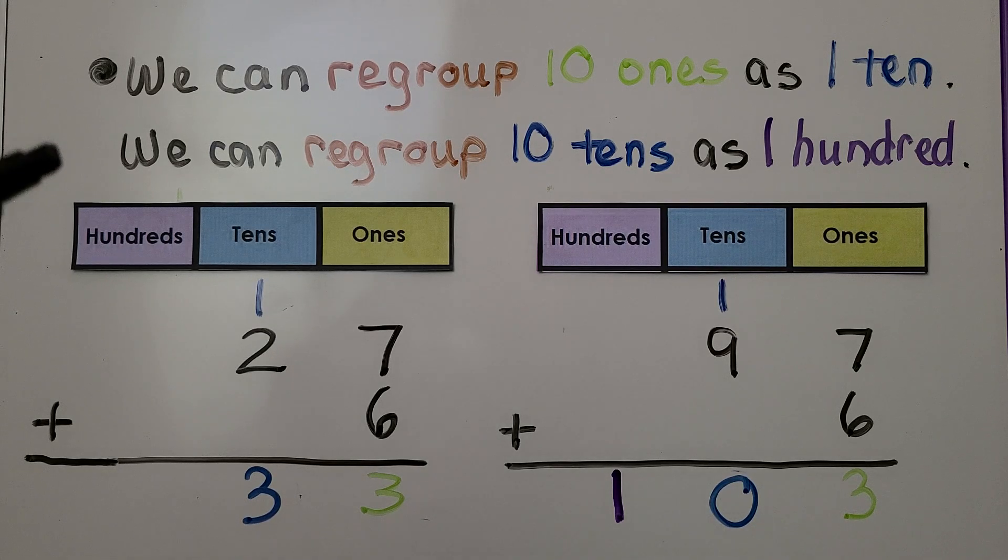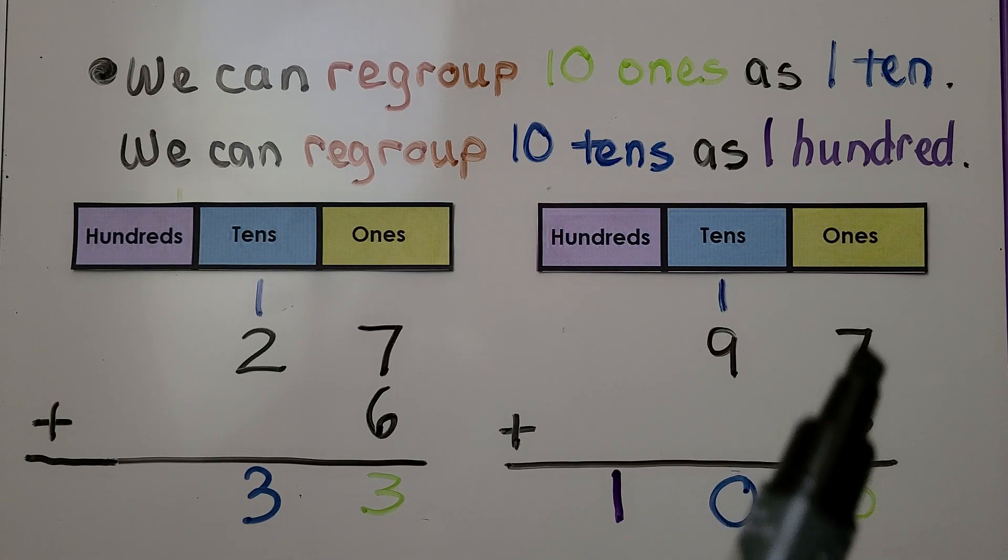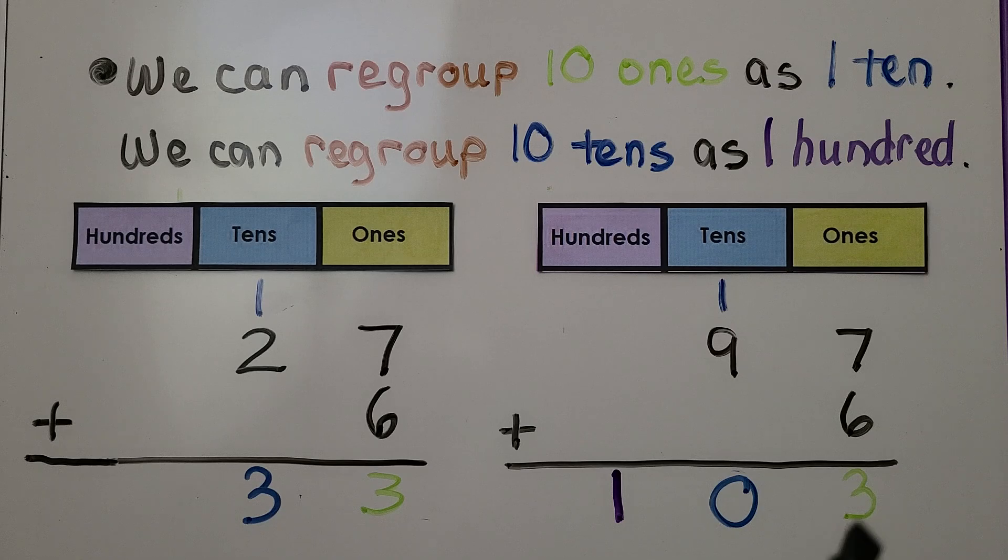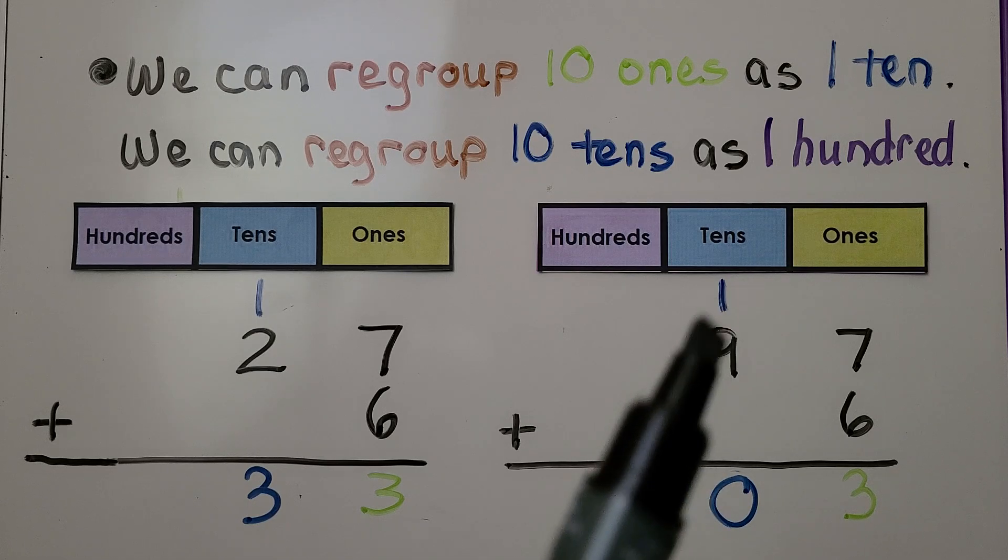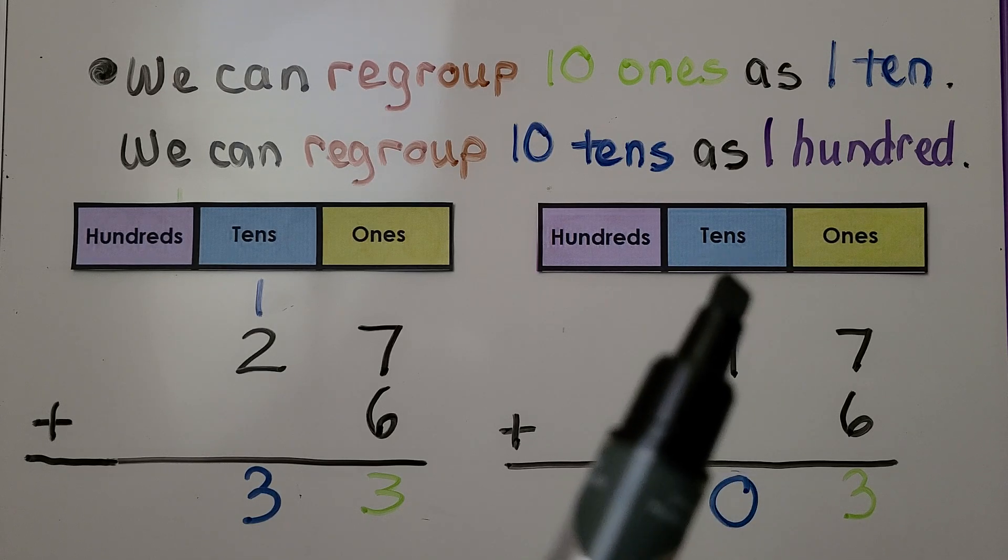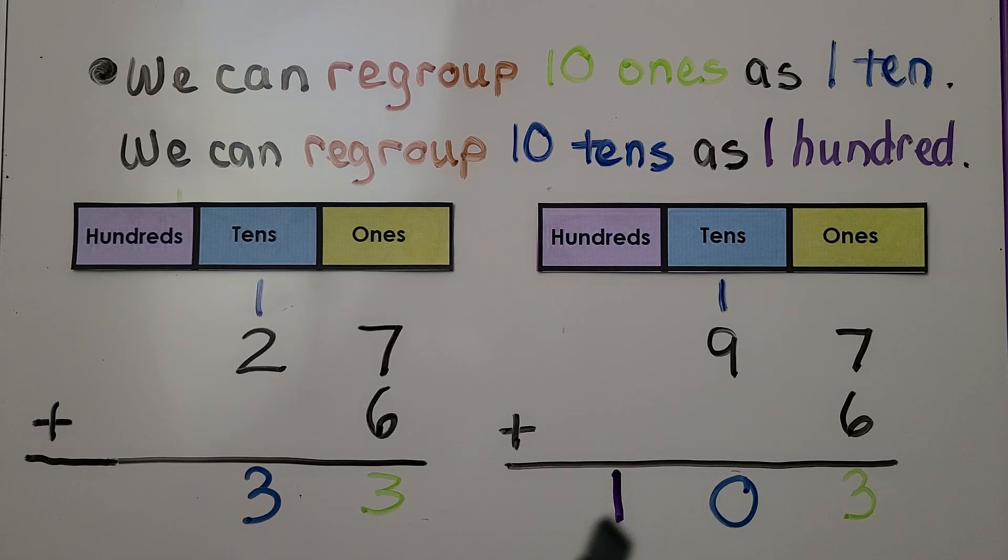We can regroup ten tens as one hundred. Here we have 97 + 6. Seven plus six equals 13. We regroup the one ten and write the three in the ones place. Now we add 9 + 1 which is 10. We have ten tens. Ten tens equals one hundred. We have one hundred, zero tens, three ones. So 97 + 6 = 103.